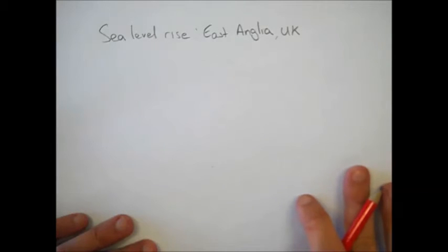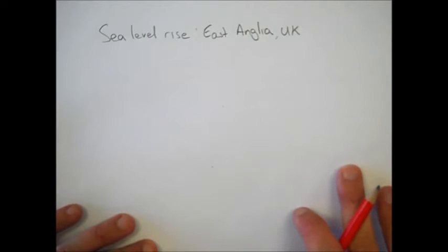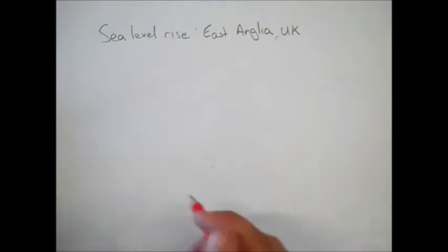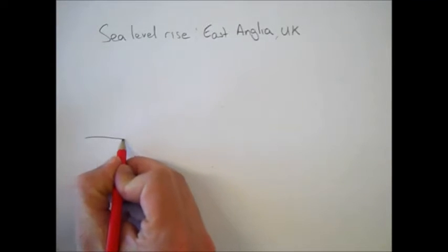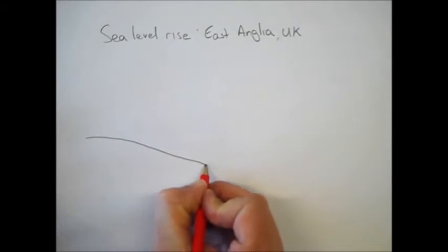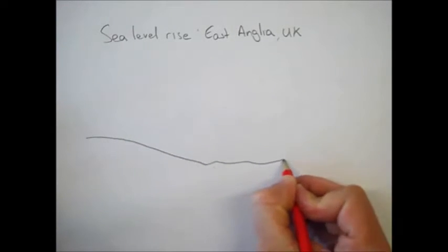Now East Anglia makes a great case study for the possible effects of coastal flooding due to the fact that the majority of the land in East Anglia is no more than 3 to 5 meters above sea level, so it's obviously very vulnerable to any sea level rise. So if we start off our diagram, we have our low flat land going into the sea.